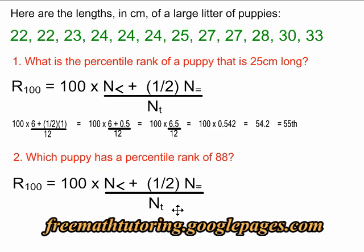But in the course that I teach, the only other way we're ever asked a question with a percentile formula is when we are given the percentile rank, like we are in question 2, percentile rank of 88. And we're asked which puppy has that percentile rank.